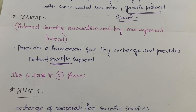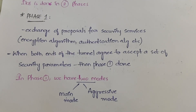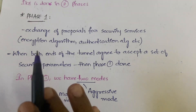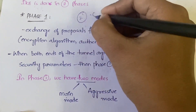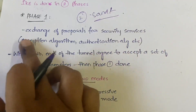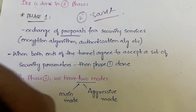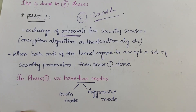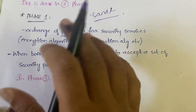Internet Key Exchange is done in two phases. In Phase 1, the two parties — the sender and receiver — exchange proposals for security services. This includes how to secure the channel, which protocols to use, and which algorithms to use. They exchange proposals, meaning they share opinions — it's not a decision yet, just giving opinions.